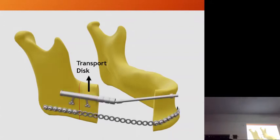We attach the distractor device and immobilize the osteotomy segments proximally and distally. The advantage of using this is it will not allow these segments to move. When we move this disc anteriorly, the mandible curves in the symphysis and parasymphysis region. The reconstruction plate is going to guide the transport disc along the curved path.